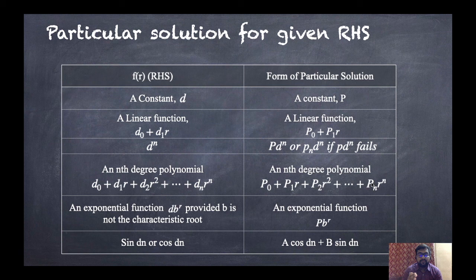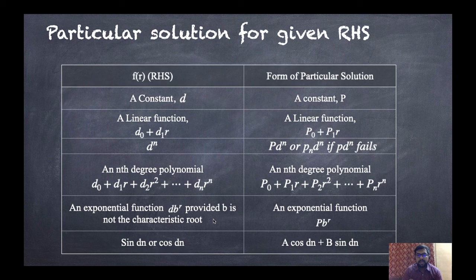Fifth type: whenever we have an exponential function, that is D·B^R, and provided D is not a characteristic root, then we take P·B^R. Remember, whenever B is a characteristic root, we have a different type and that we will discuss in the next session.